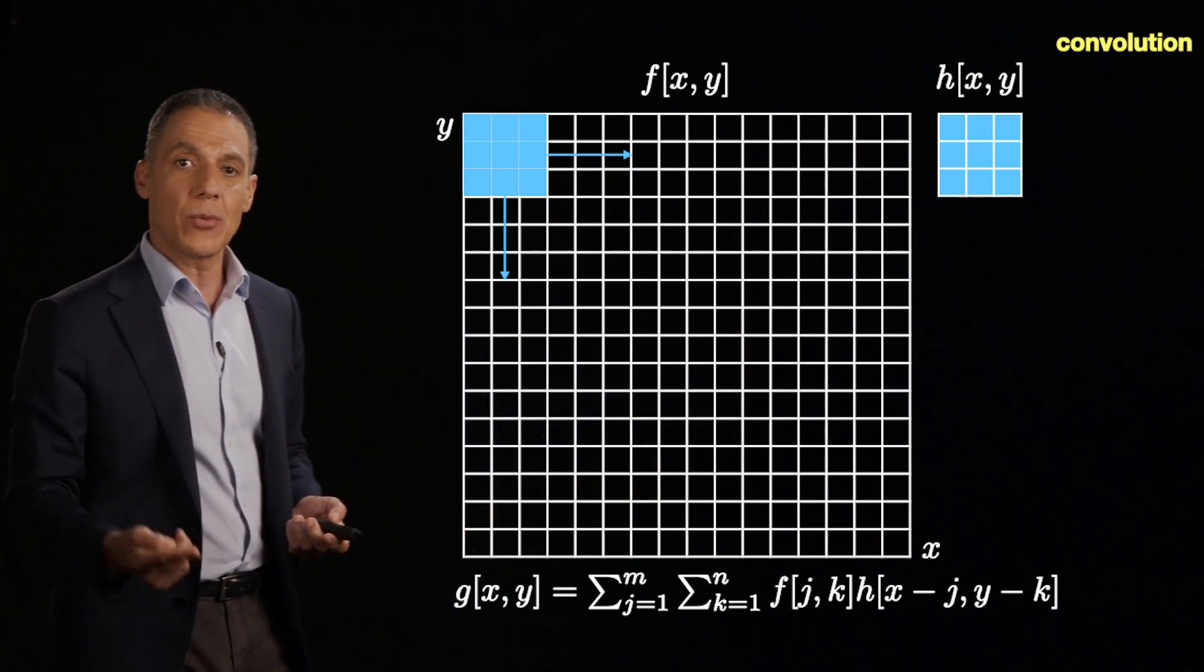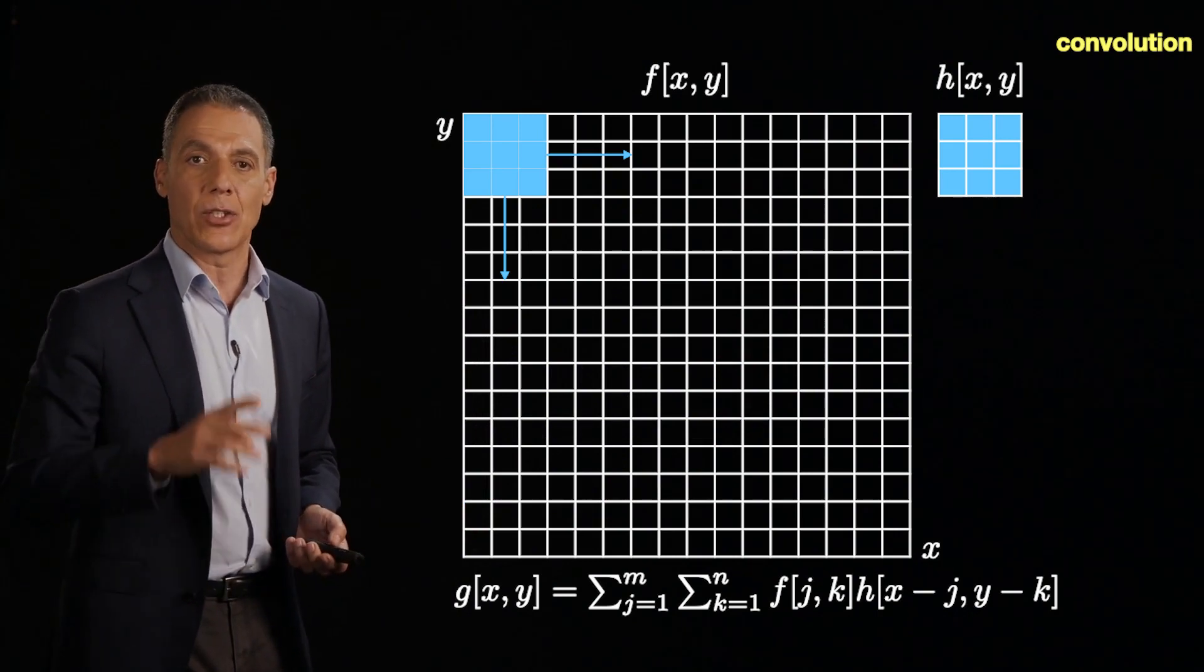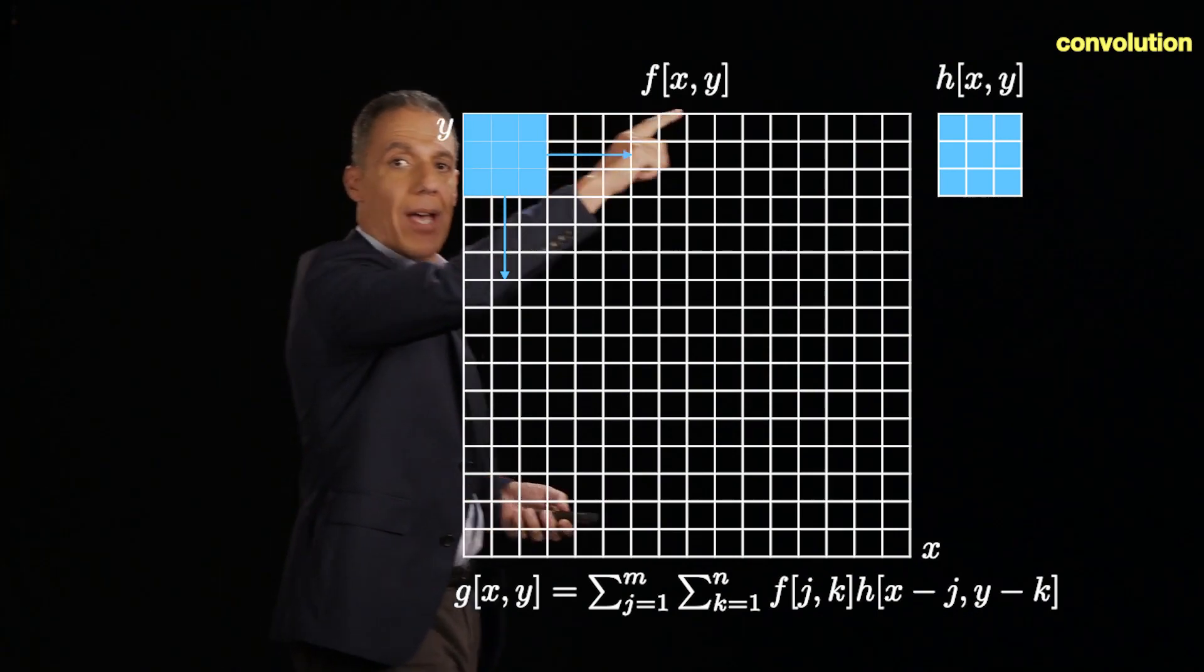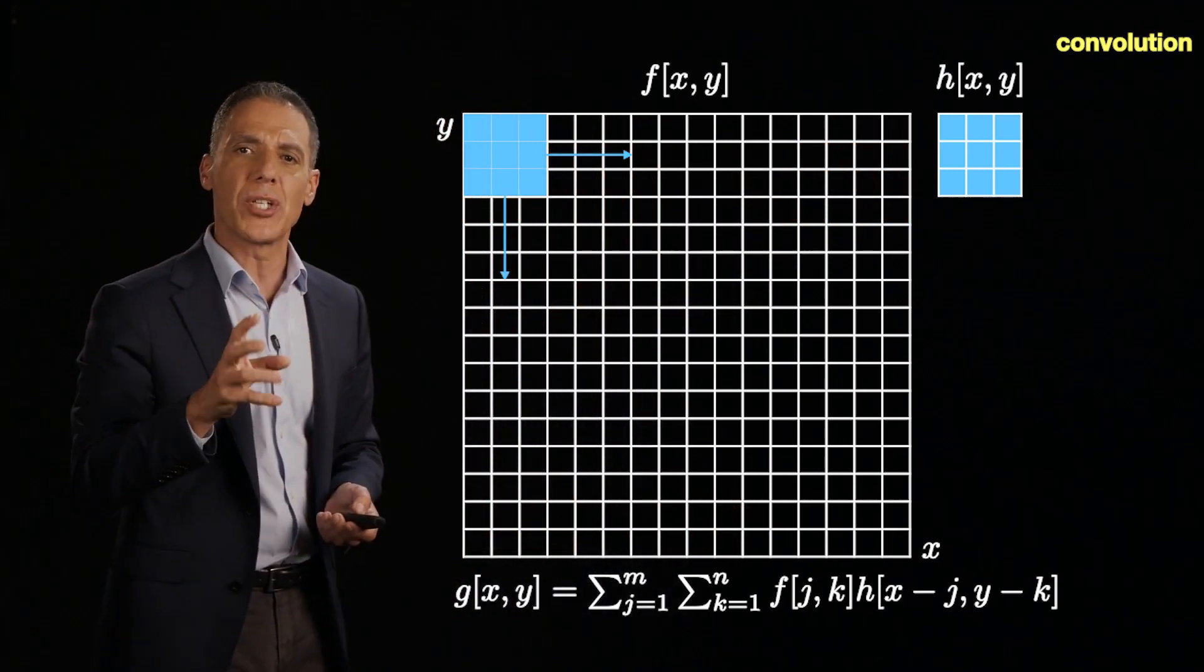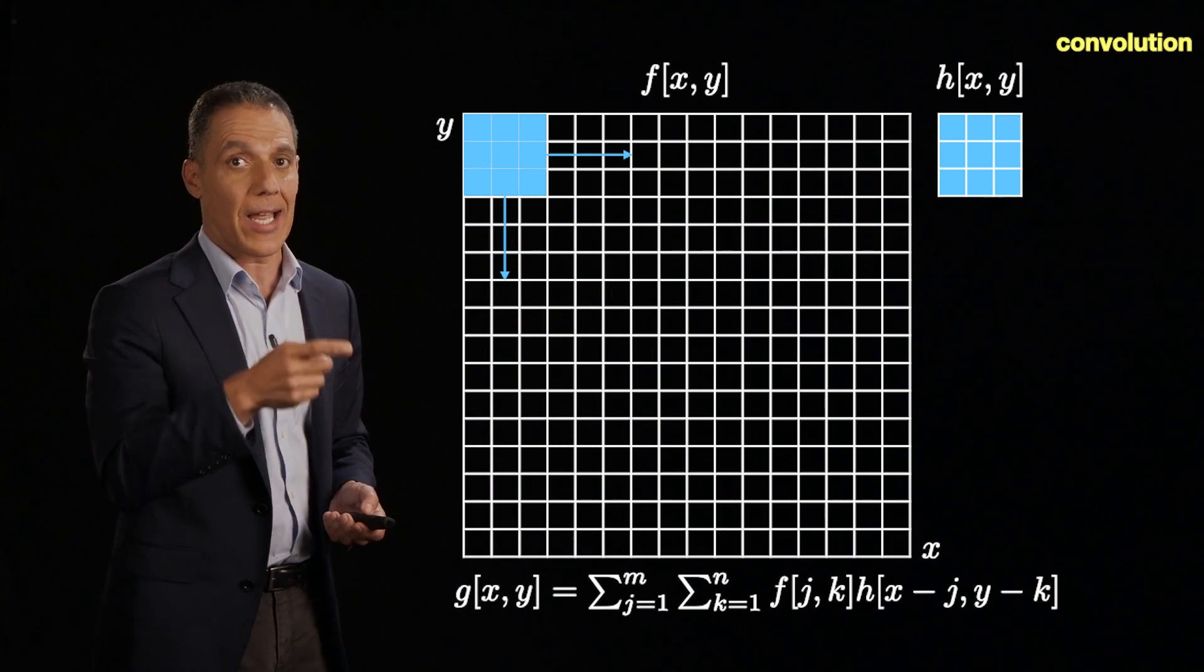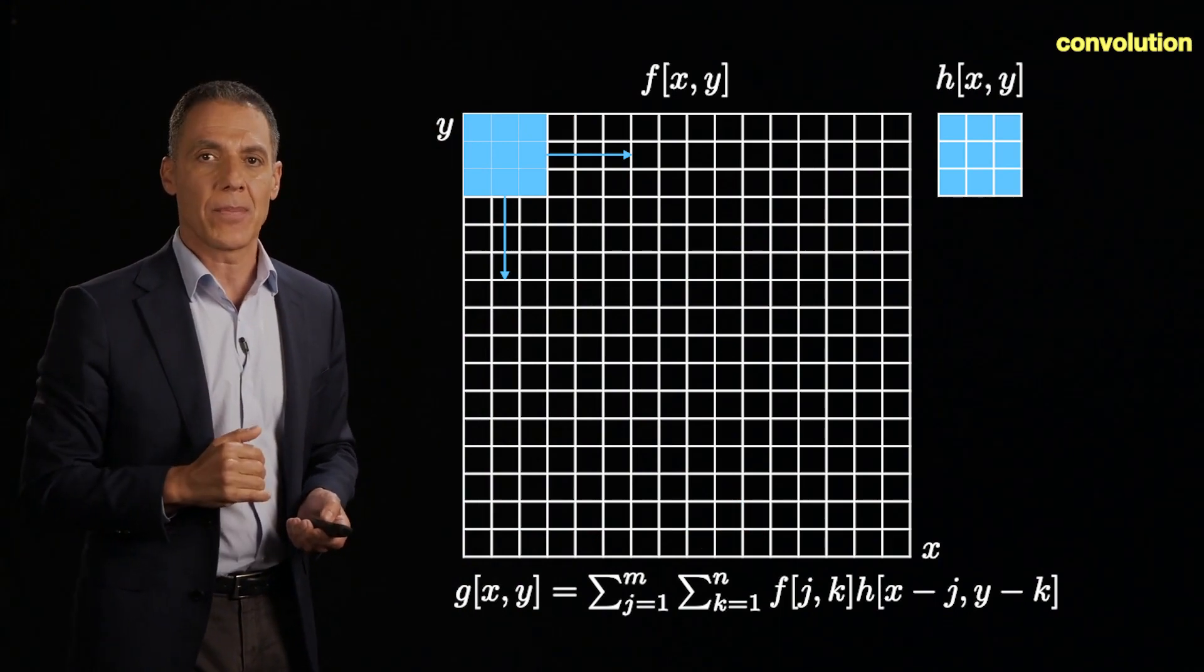And so when I'm doing the convolution sum here, the computational complexity is going to depend on the size of the kernel. So 3 by 3, pretty good. Although if you have a lot of pixels, that's a lot of calculations, sliding left to right, top to bottom.